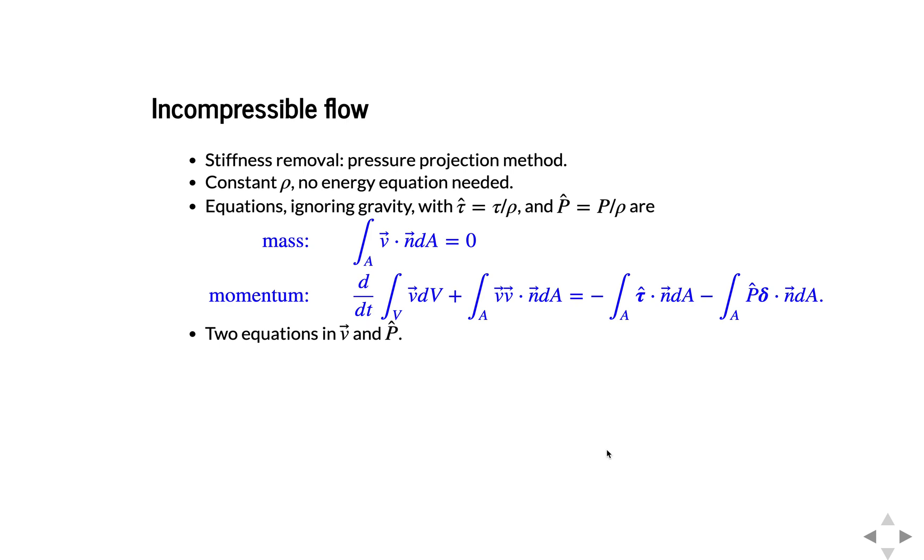Literally we say density is constant. And that means we're not going to need an energy equation, because we won't have fluctuations in temperature due to compression and energy. So the equations, if we ignore gravity and then divide through by the constant density, then we get these equations, and here we'll just call tau hat tau over rho and p hat p over rho. Then we get the equations listed here in blue. So this is the continuity equation. Differential form, this is del dot v equals zero. And then momentum is listed here.